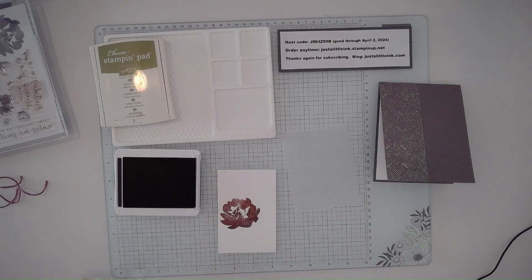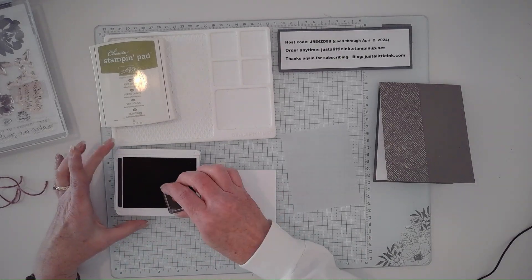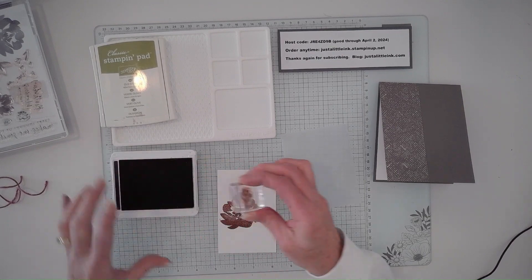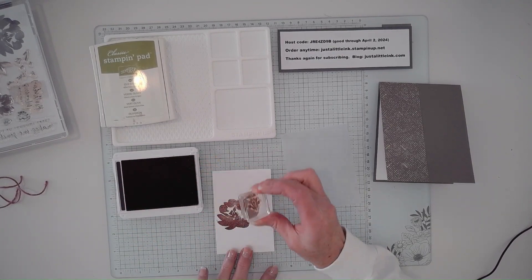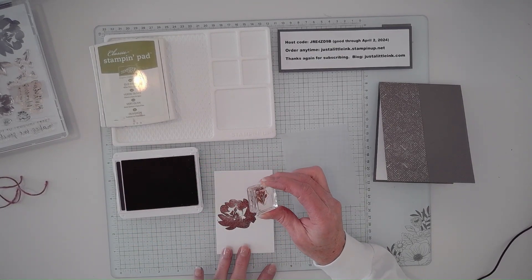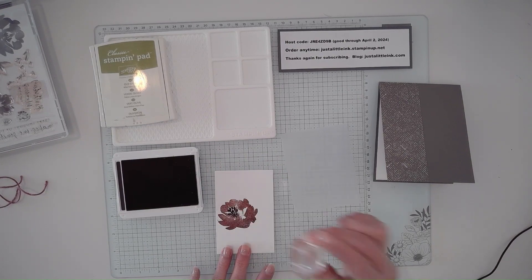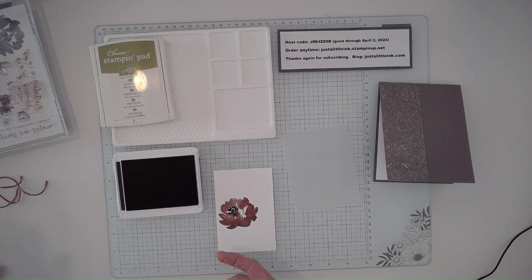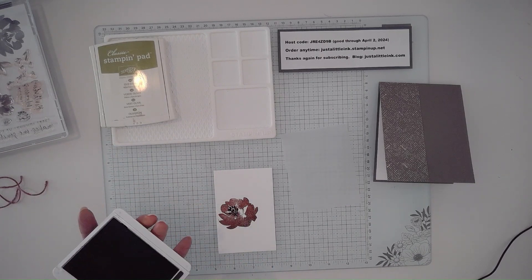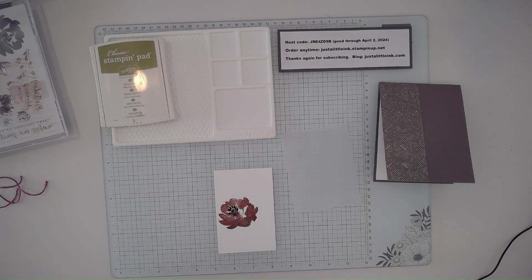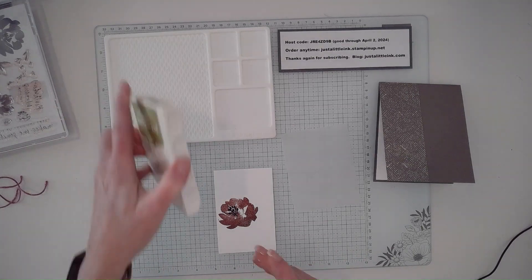Do know that photopolymer stamps do stain when you use certain colors. This is the little stamen. It does not affect how they stamp, just a stain on the stamp. Your reds and your purples are the worst.